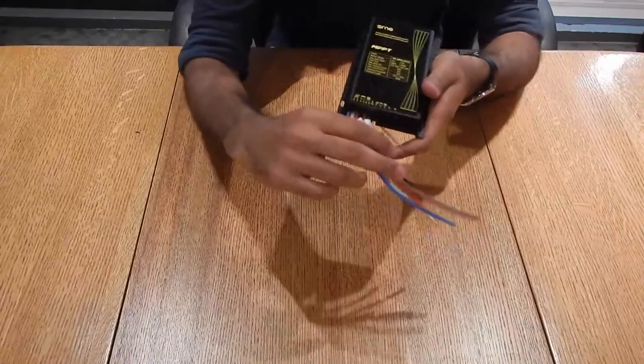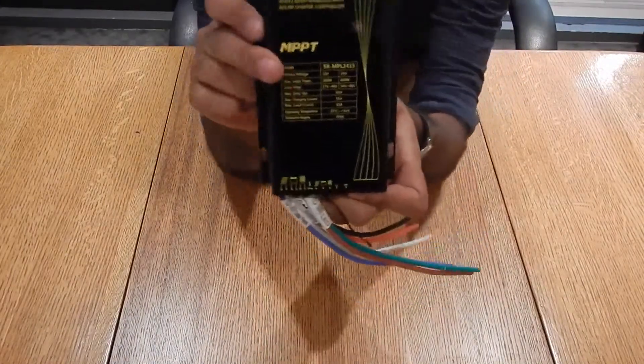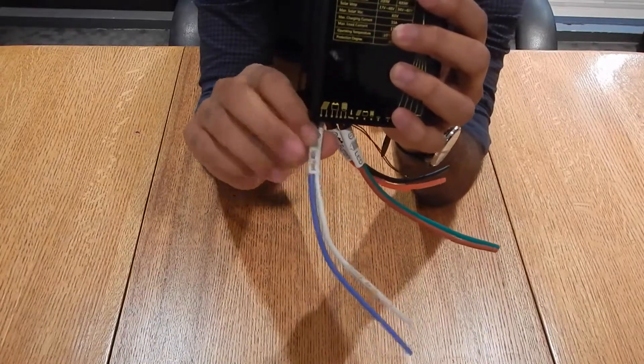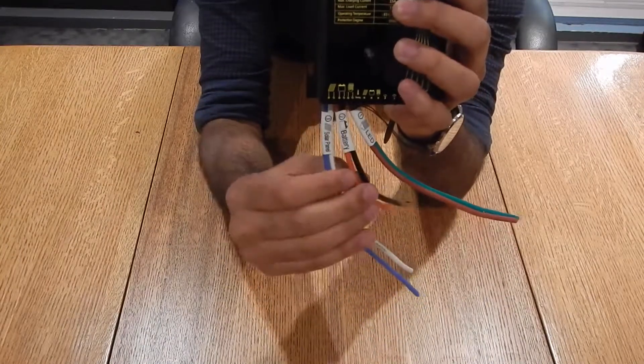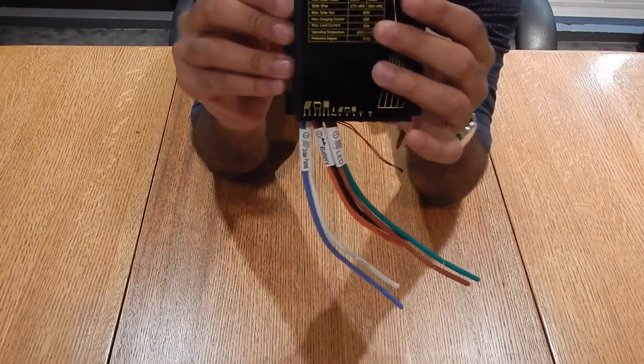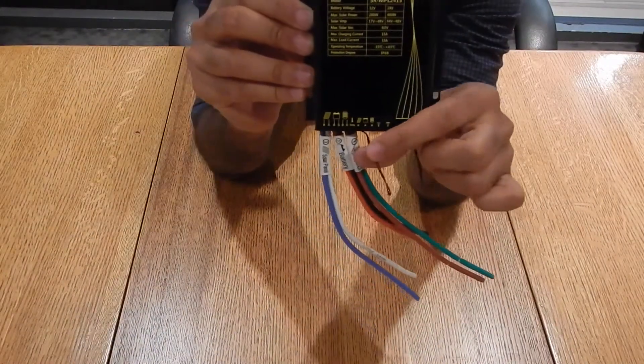Let me guide you through the basics of the charge controller itself. This is what it looks like. You have two leads for the solar panel, two leads for the battery, and two leads for the LED or the load, whichever load you want to connect to.